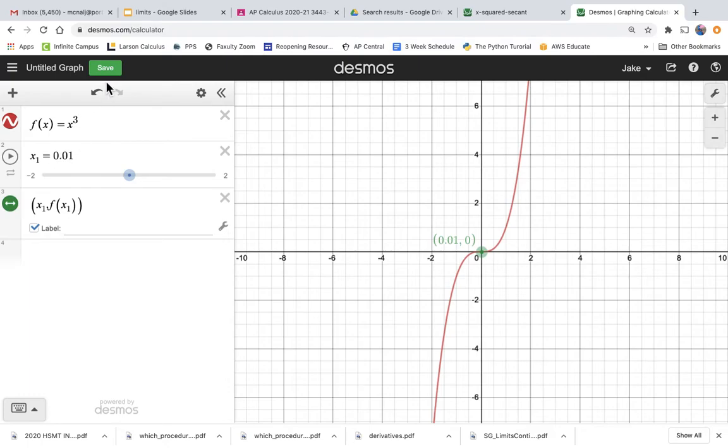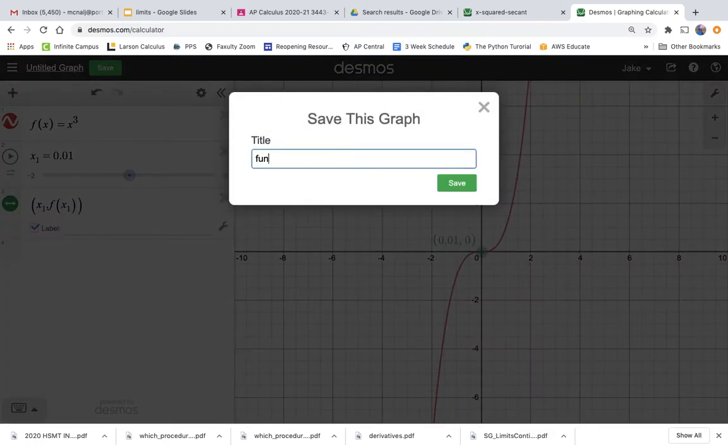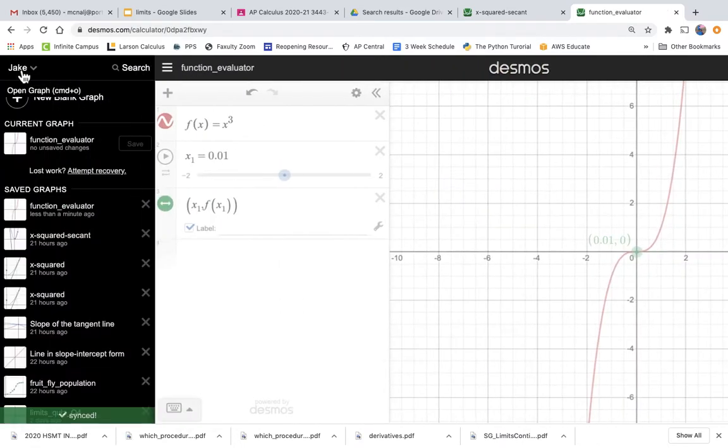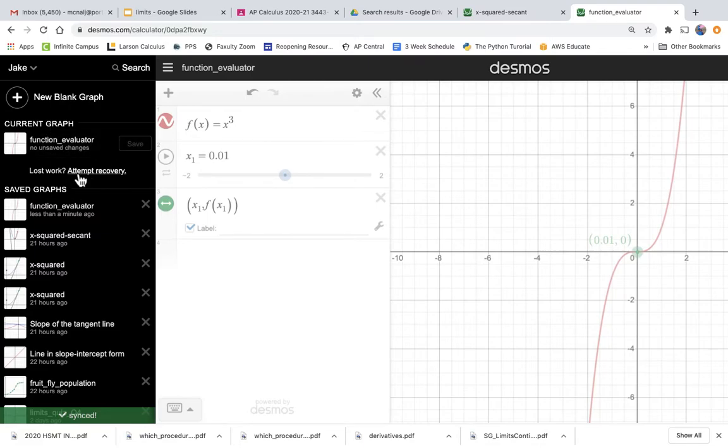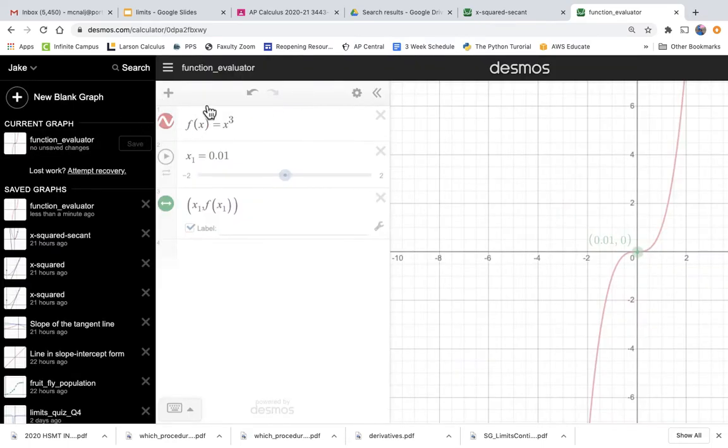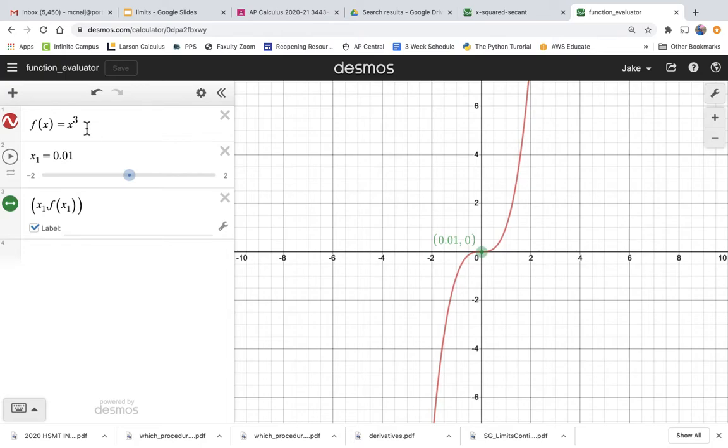We'll definitely save it, so let's give your graph a title. You can just call this function evaluator or whatever you want and hit save. Then anytime I come in here I have all my graphs saved and I could just come to function evaluator. So let's get out of here and we're just back at the function evaluator.